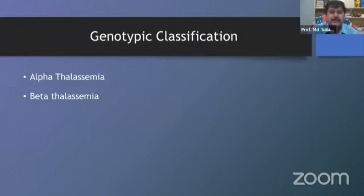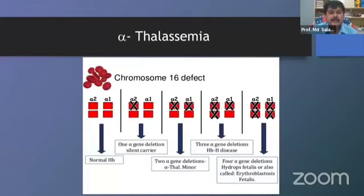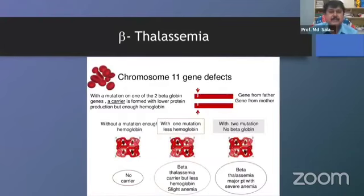If we classify thalassemia by genotypic classification, thalassemia develops due to genetic defect because it is hereditary. We can classify it as alpha thalassemia and beta thalassemia. Alpha thalassemia is due to a defect on chromosome 16, and beta thalassemia is due to a defect on chromosome 11. Due to defects in these genes, there is deficiency or absent production of alpha or beta polypeptide chains.